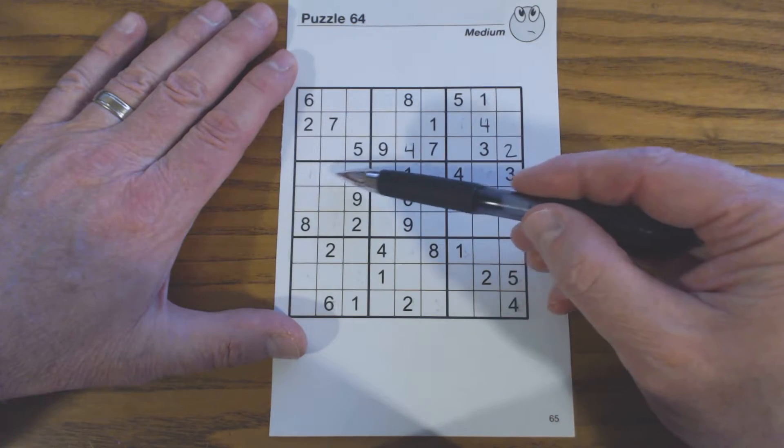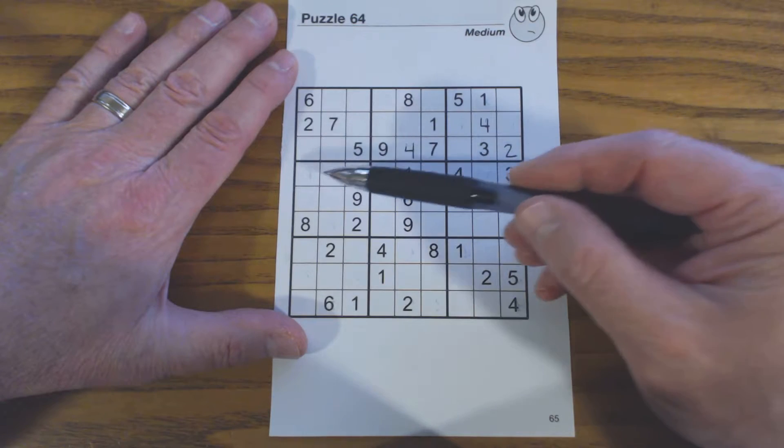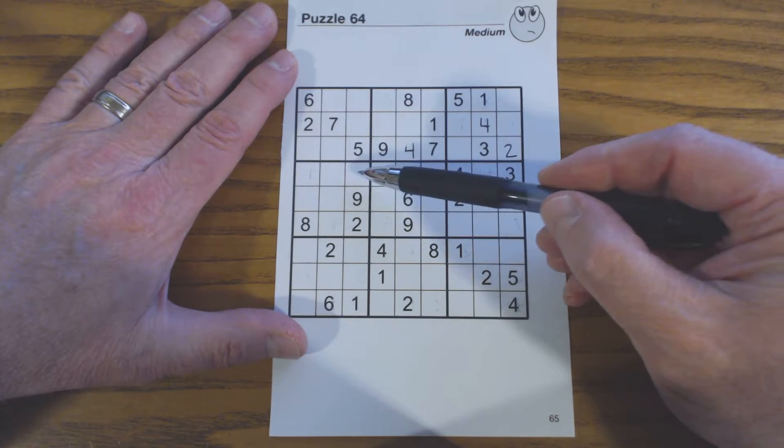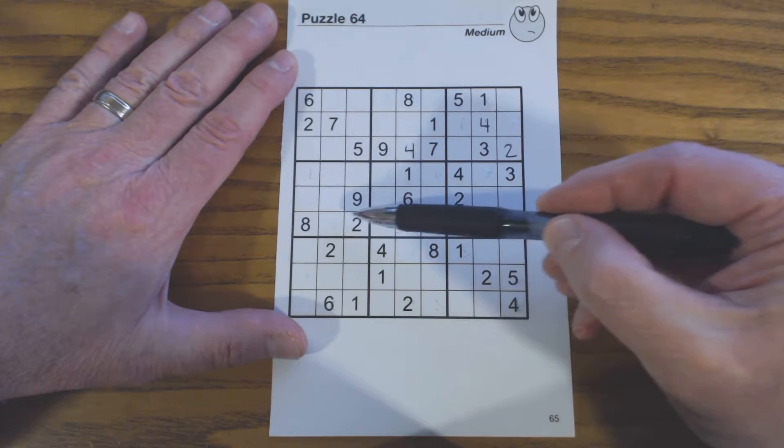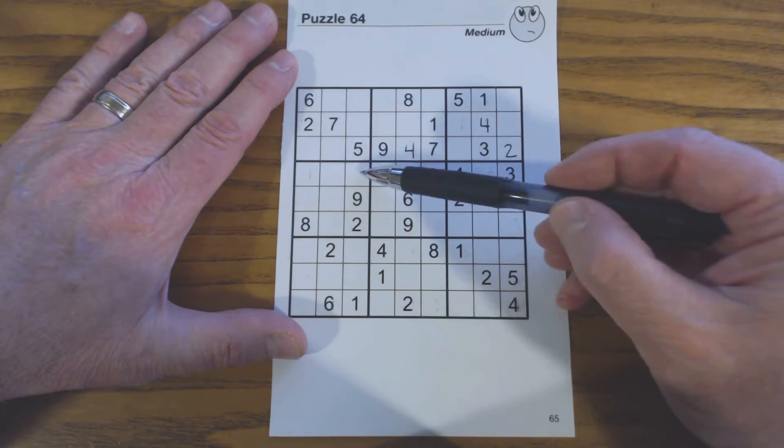So that means that these three numbers can't be a 1, 3, or 4. And so we can figure out what these numbers are. 1, 2, 3, 4, 5, 6, 7, 8, 9. So these three numbers are 5, 6, and 7.